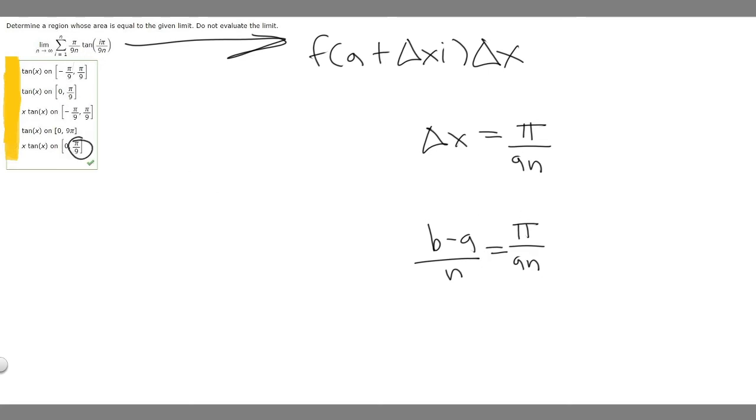If we go ahead and do that, this one's going to be a and this one's going to be b for all of them. So if we do this one, we have pi over 9 minus 0 over n, and this will equal pi over 9n. So this one will work.